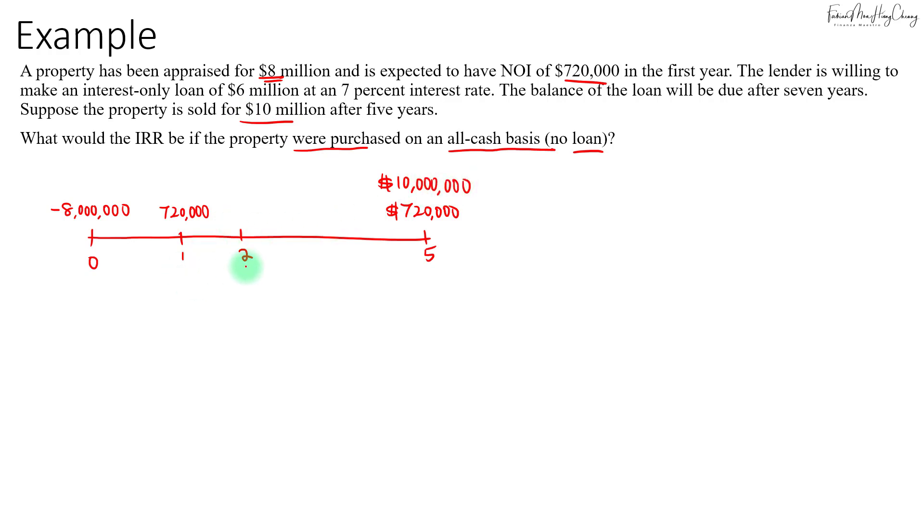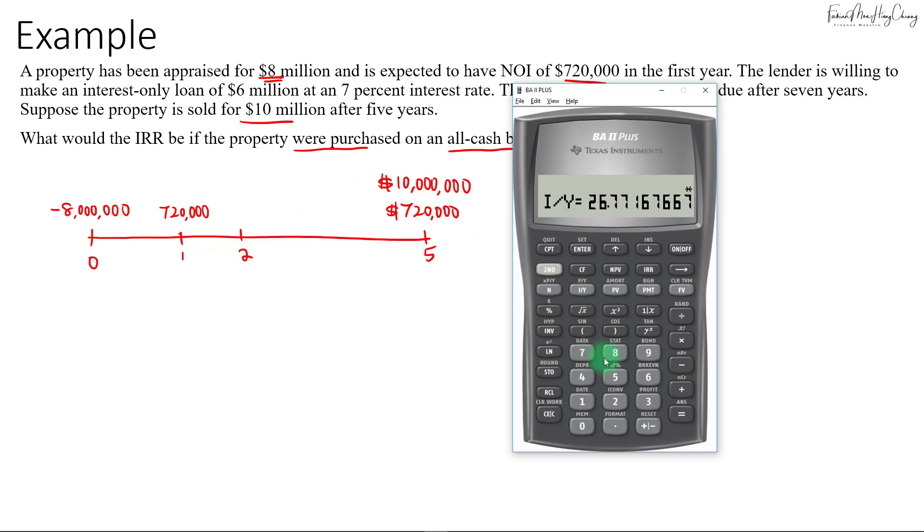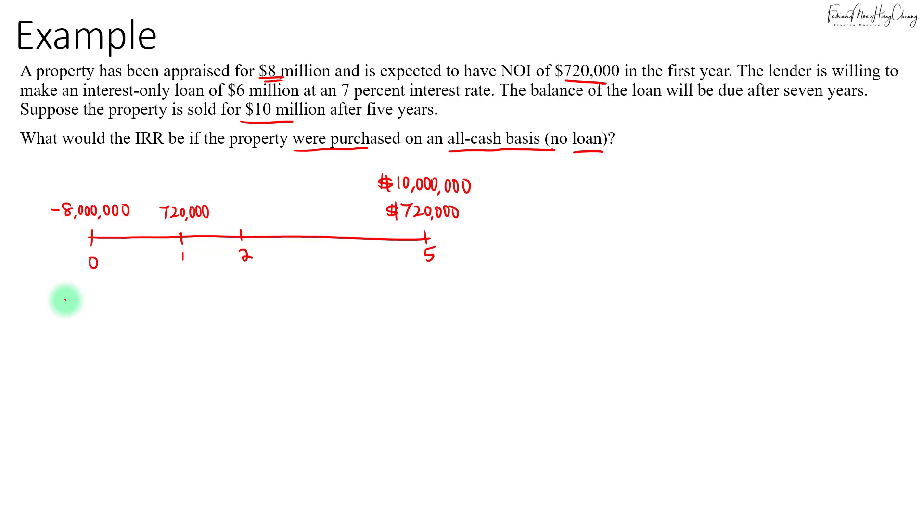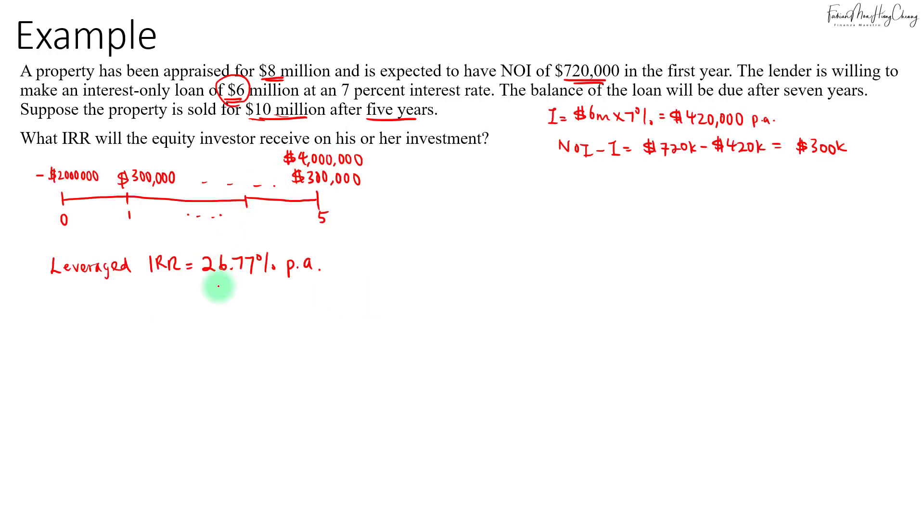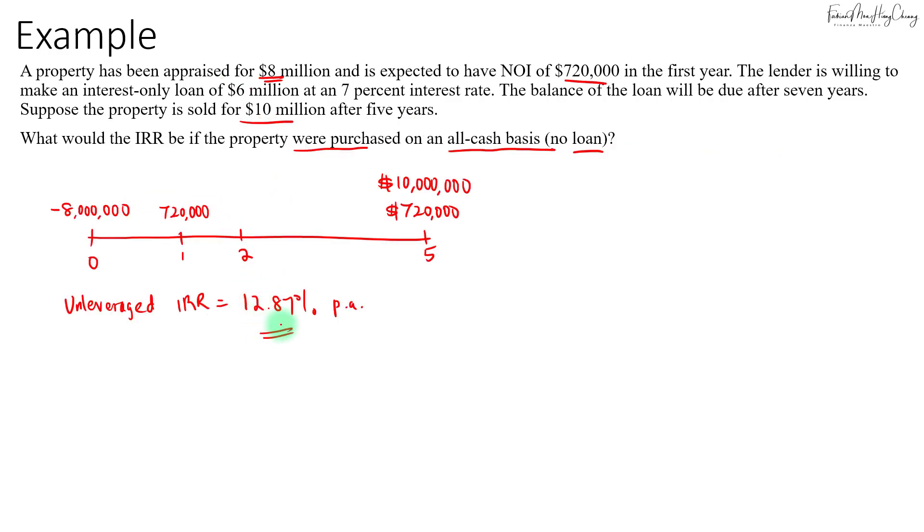In this case, if you use the calculator, I will key in $8 million as the outlay PV, $720,000 as the PMT, and $10 million as the FV. Then we compute the IY, which is 12.87%. So your unleveraged IRR will be 12.87%. You can see that in the case where you made a profit on the sale of the property, the leveraged IRR will always be greater than the unleveraged IRR.